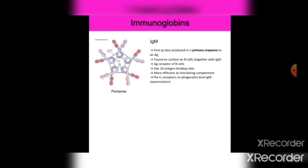IgM is the first immunoglobulin class produced in a primary response to an antigen. Found on the surface of B cells as antigen receptors, IgM has 10 antigen-binding sites, making it more effective at stimulating complement. IgM binds Fc receptors on phagocytes.